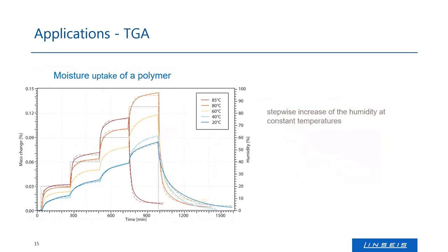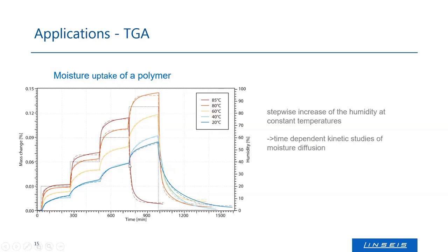Another experiment shows a stepwise increase of humidity at constant temperatures with a polymer measured under isothermal conditions. We see a temperature increase to the target level, and then at 20°C, 40°C, 60°C, 80°C and 85°C, uptake of water is observed. Also interesting is the time-dependent uptake of water — from these studies, kinetic parameters can be calculated.